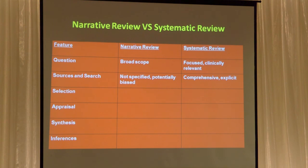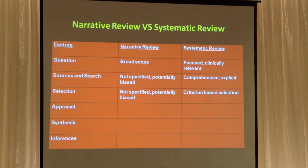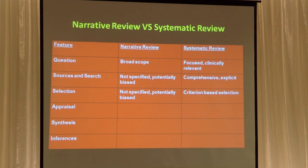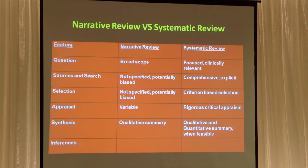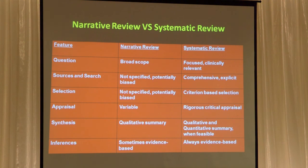Selection of articles: very explicit in a systematic review, and potentially biased in a chapter — because you have an idea about what the answer to a question is, and you can select the evidence to support that. Appraisal of the evidence is specified in a systematic review, just the way we just did. The synthesis is quantitative if you can, and qualitative within very rigid guidelines. As a result, the inferences are occasionally evidence-based in a chapter, but always evidence-based in a systematic review.